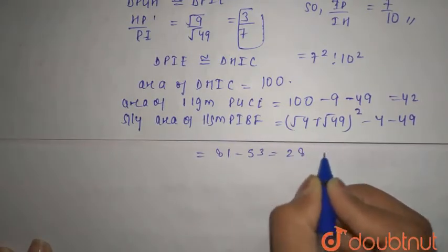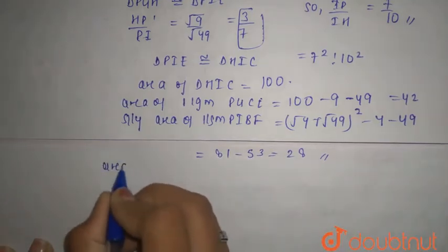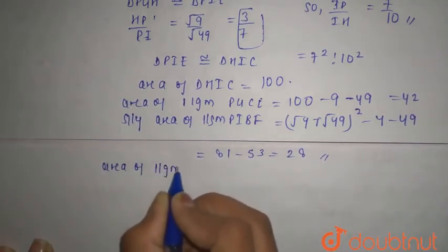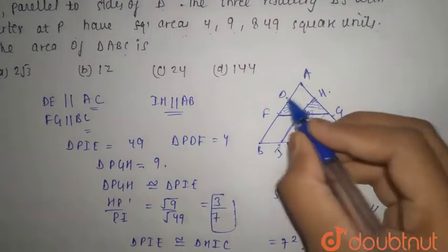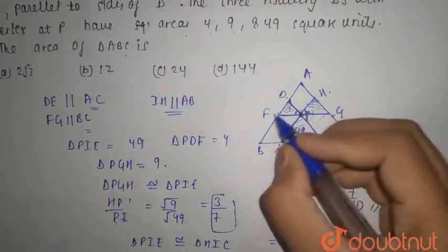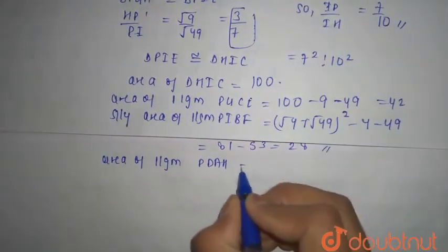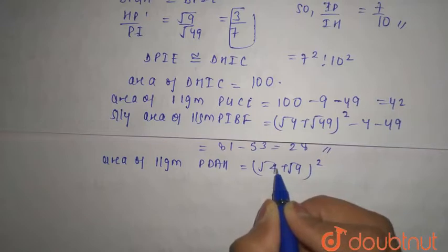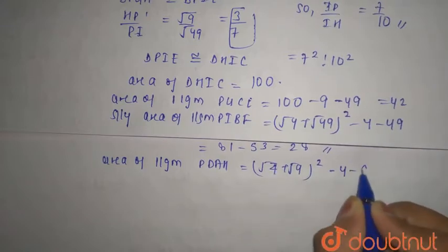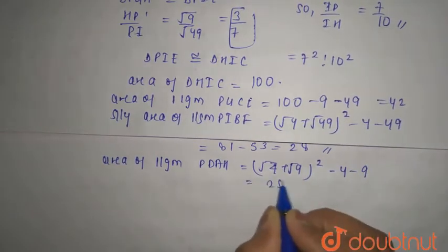Area of parallelogram PIBF equals 28. For the third parallelogram, area of PDAH equals (√4 + √9)² minus 4 minus 9, which is 25 minus 13, equals 12.